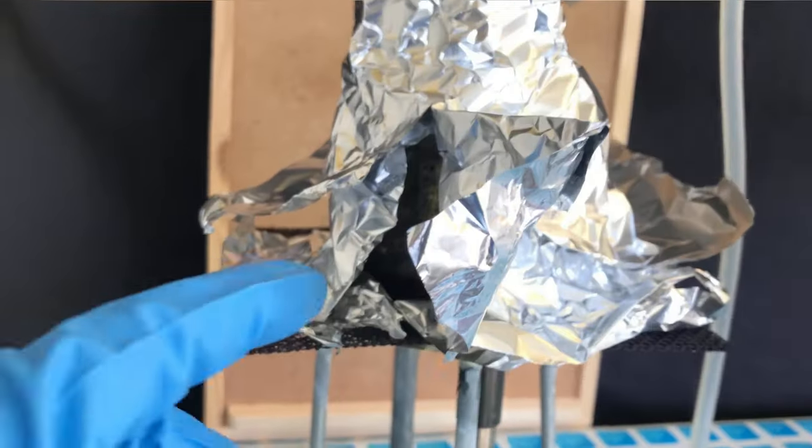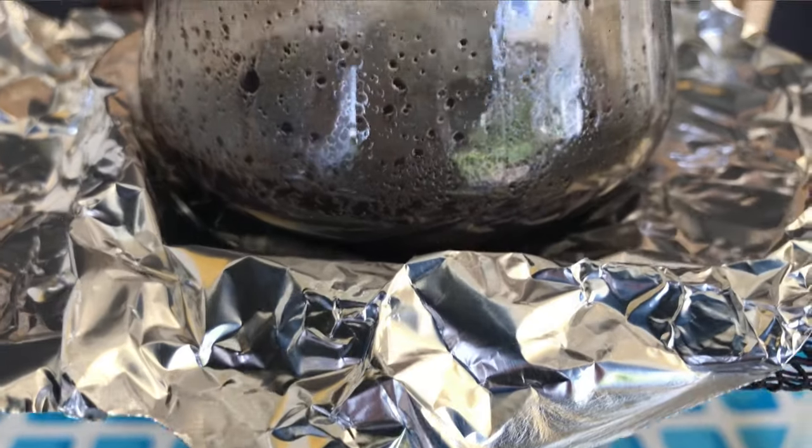If we continue heating, we might run the risk of creating a lot of white phosphorus, and we don't want that at the moment. You can now see a lot of beautiful black tar.